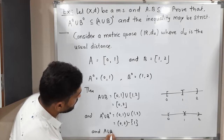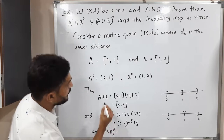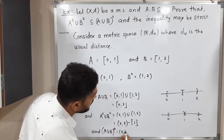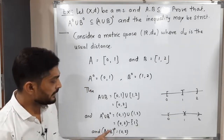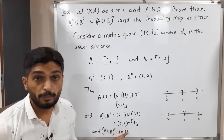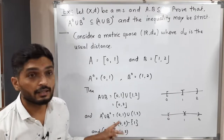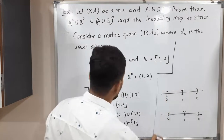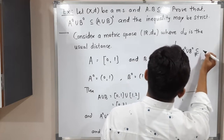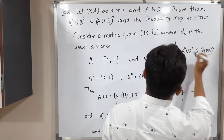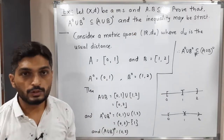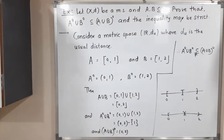Now, interior of A union B: we already found A union B = [0,2], and its interior is the open interval (0,2). So interior of A union B is (0,2), but interior of A union interior of B is (0,2) minus {1}. These two sets are different. Therefore, interior of A union interior of B is NOT equal to interior of A union B — it is a proper subset. This shows the inequality may be strict.